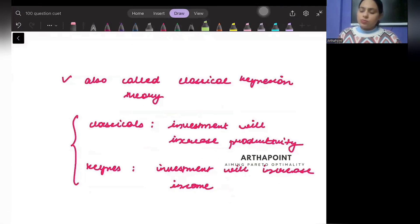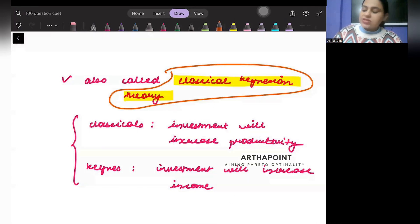Before I go there, let me tell you that the Harrod-Domar model is also called the classical Keynesian theory. Why is this called classical Keynesian? It is because it is a combination of what the classicals had suggested and what the Keynesians had suggested.